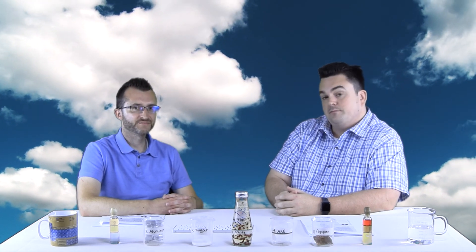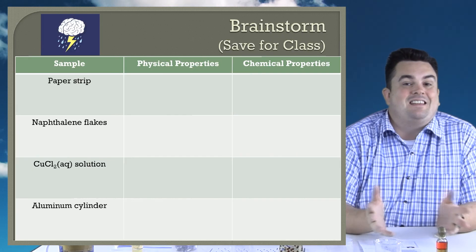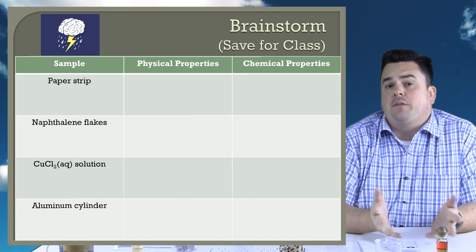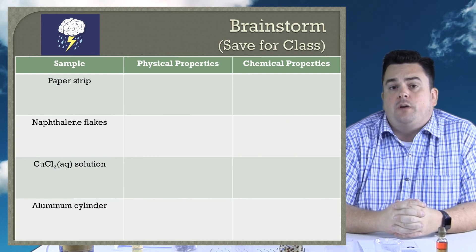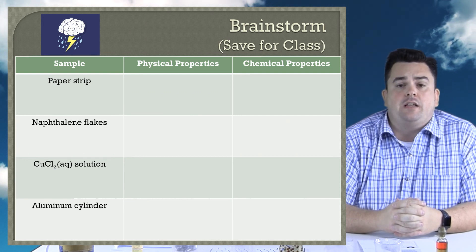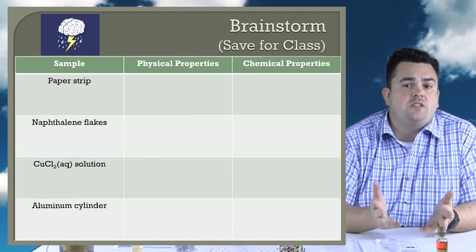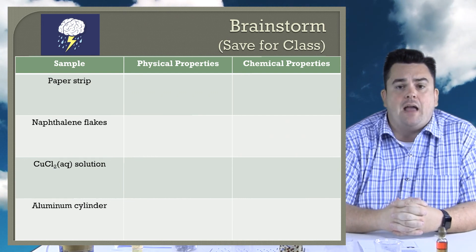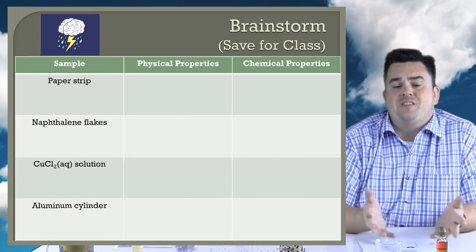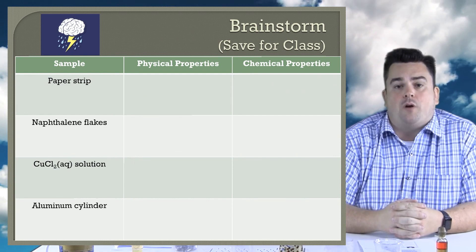Alright, this last part references a table we're going to fill out tomorrow in class. We're going to take a look at four samples of matter and fill out their physical and chemical properties. That's going to do it for today's episode on changes and properties of matter. Later nerds!